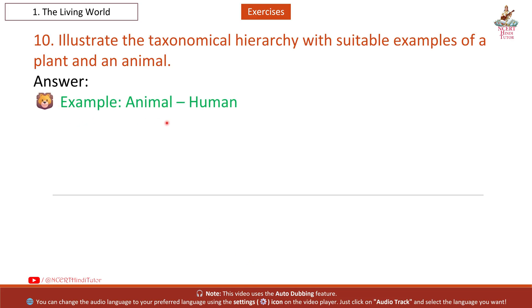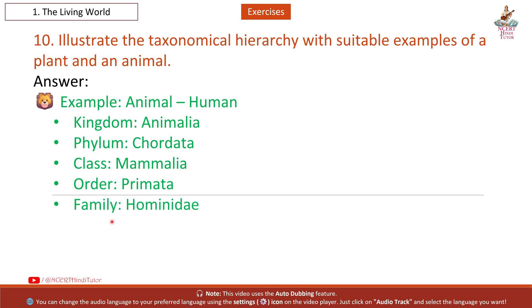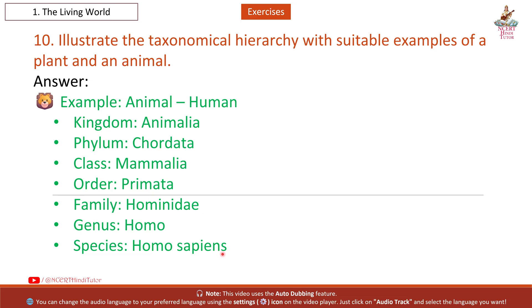Animal example: Human. Kingdom: Animalia; Phylum: Chordata; Class: Mammalia; Order: Primata; Family: Hominidae; Genus: Homo; Species: Homo sapiens.